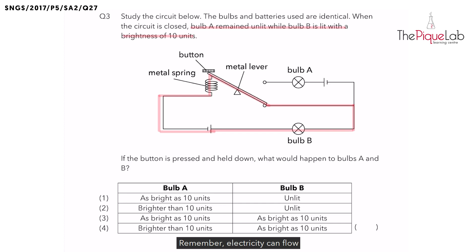Remember, electricity can flow through the metal lever and metal spring because metal is a conductor of electricity. How many batteries do you see in this red pathway? There's only one battery in this pathway supplying electricity to bulb B.